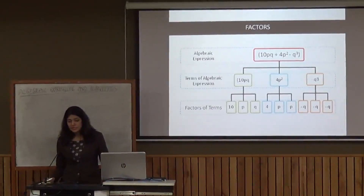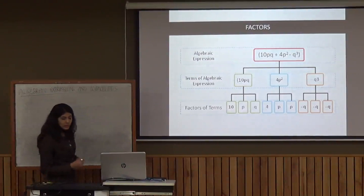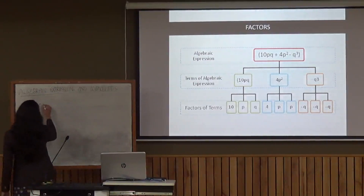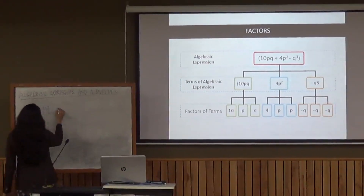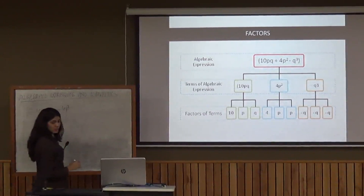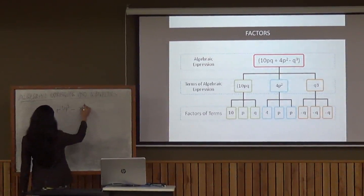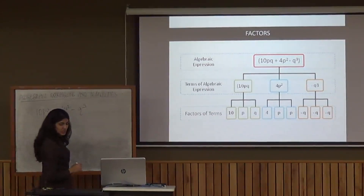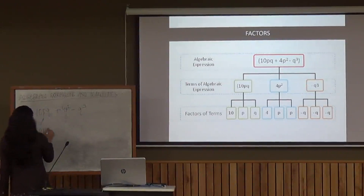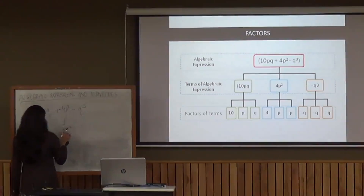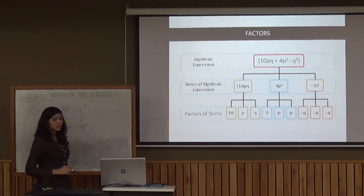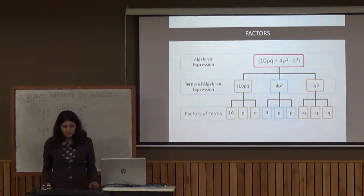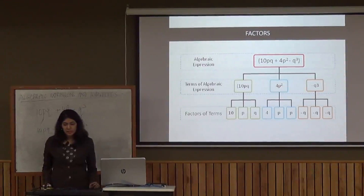Now let's come to factorizing the terms of an algebraic expression. Considering the algebraic expression 10pq plus 4p square minus q squared, we will learn factorization here. After segregating the terms, we factorize each: 10pq as 10 multiplied by p multiplied by q, similarly 4p square, and similarly minus q squared.